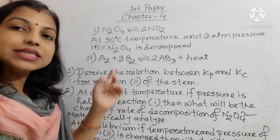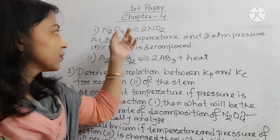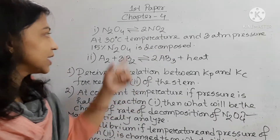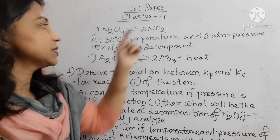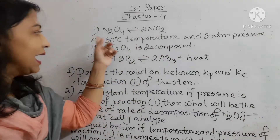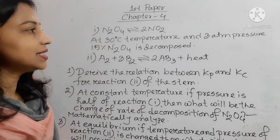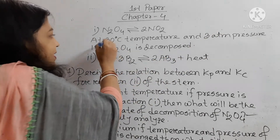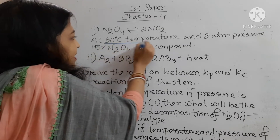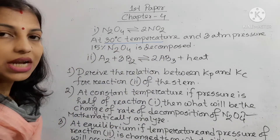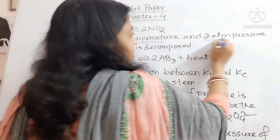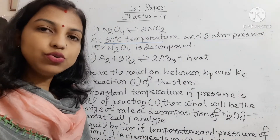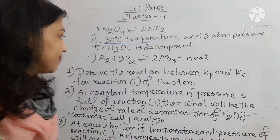N2O4 is nitrogen tetraoxide. When it decomposes, it produces nitrogen dioxide: N2O4 ⇌ 2NO2 at 30 degree Celsius temperature and 3 atm pressure. At these conditions, 15% of N2O4 is decomposed.